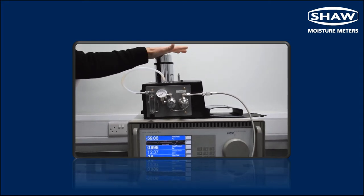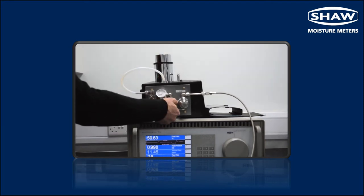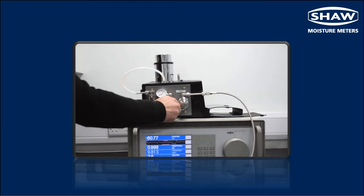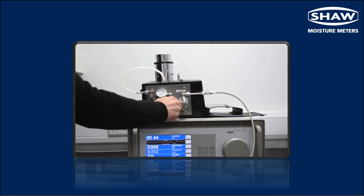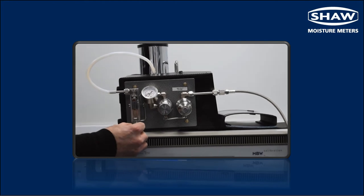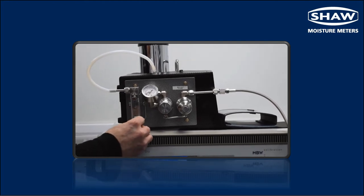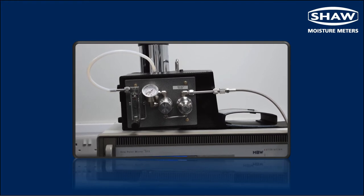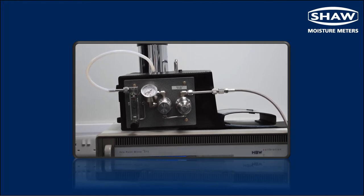So first of all, open the pressure regulator. Then we can adjust the flow meter. So for sampling we want a flow of about 2 to 5 litres, but for purging we can go higher than that.